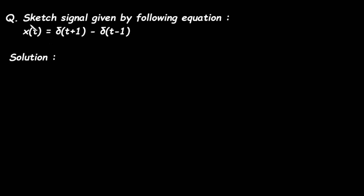In this video we will see how we can sketch a signal given by the following equation. The equation is x(t) = δ(t+1) - δ(t-1). This x(t) represents a continuous time signal. The δ represents an impulse which is shifted by one, and t-1 is a property of shifting.